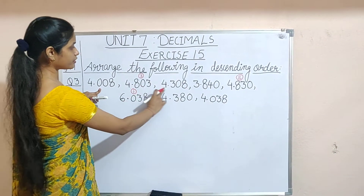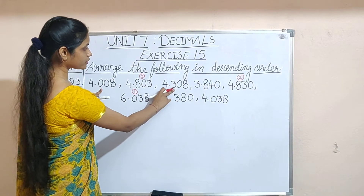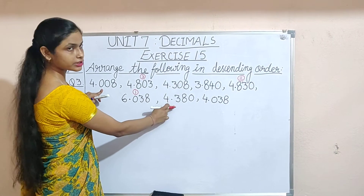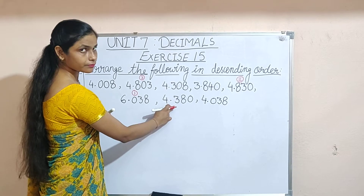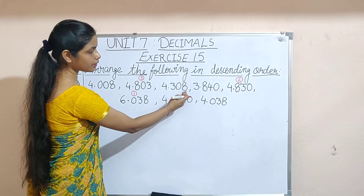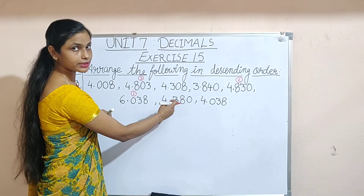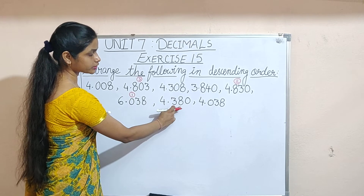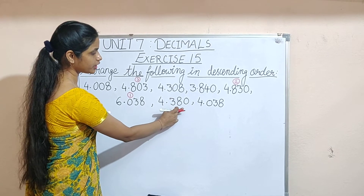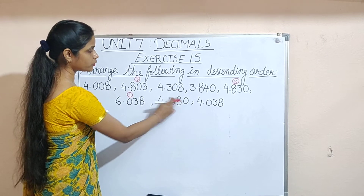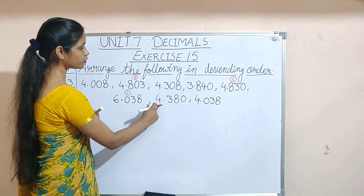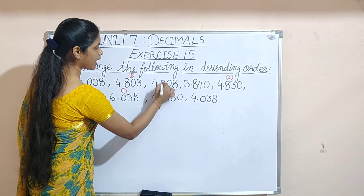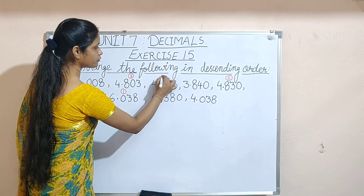Now we compare the remaining numbers. The first decimal place for both is 3 — they are the same. So we compare the next decimal place: one is 0 and the other is 8. It means 4.380 is bigger than 4.308. So 4.380 will be the fourth number and 4.308 will be the fifth number.